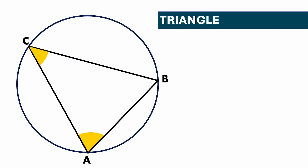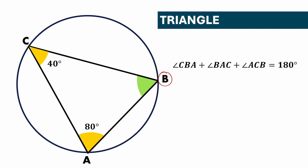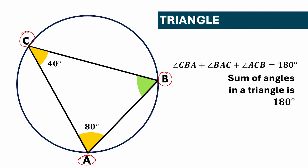Next we will discuss the triangle property. Angle A is 80 degrees and angle C is 40 degrees; we need to find angle ABC. In a triangle, angle CBA plus angle BAC plus angle ACB equals 180 degrees, because the sum of angles in a triangle is 180 degrees. Therefore angle CBA equals 180 minus (80 plus 40), which equals 180 minus 120, equal to 60 degrees.